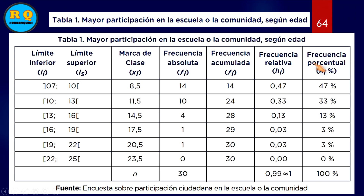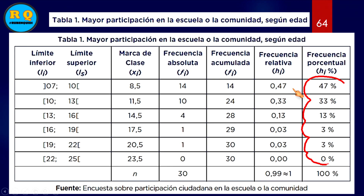La frecuencia porcentual no es otra cosa más que multiplicar la frecuencia relativa por 100. Me da 47%. El 0,03 multiplicado por 100 me da el 3%, y así sucesivamente. Recuerden que la sumatoria de la frecuencia porcentual siempre debe dar el 100% porque es un total.